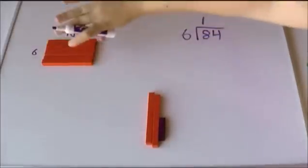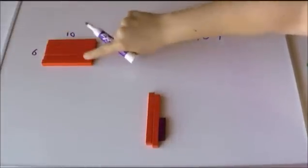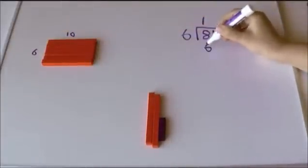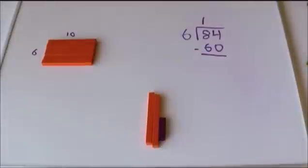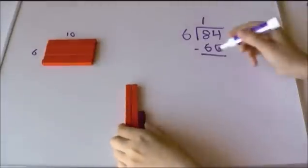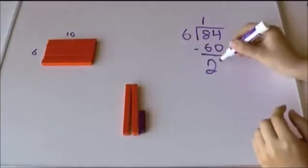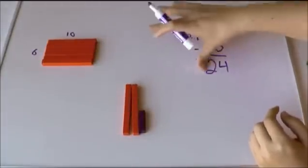So how much have I taken away? I've taken away 10 times 6, which is 60. I took away 60 from my original 84 here. So 84 minus 60 is about 24.